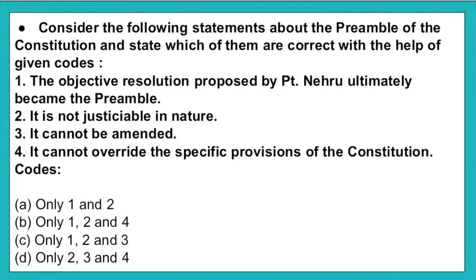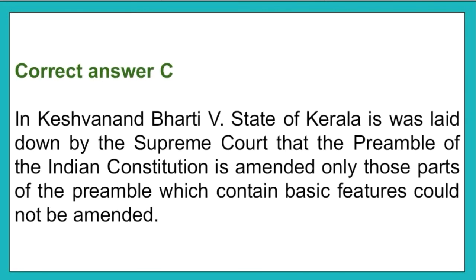The next question: Consider the following statements about the preamble of the constitution. One: the objective resolution proposed by Pandit Nehru ultimately became the preamble. Two: it is not justiciable in nature. Three: it cannot be amended. Four: it cannot override a specific provision of the constitution. Option A: only one and two. Option B: only one, two, and four. Option C: only one, two, and three. Option D: only two, three, and four. The correct answer is option C. In the Kesavananda Bharati v. State of Kerala case, the Supreme Court laid down that the preamble of the Indian constitution can be amended, but parts containing basic features cannot be amended.